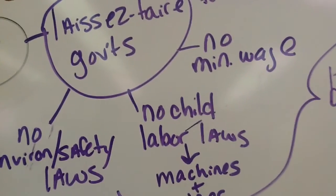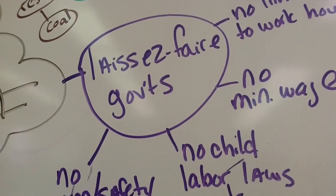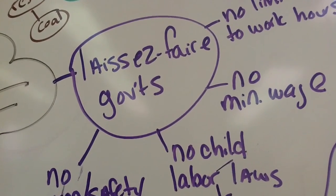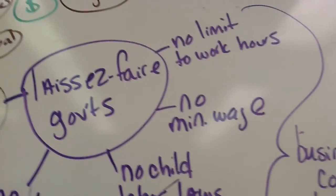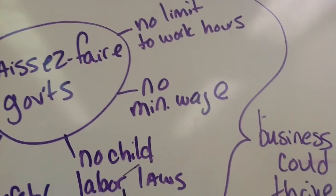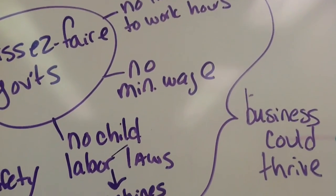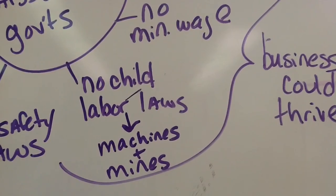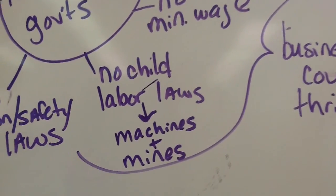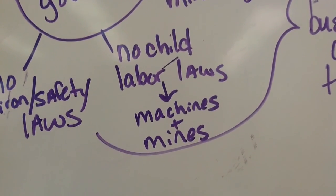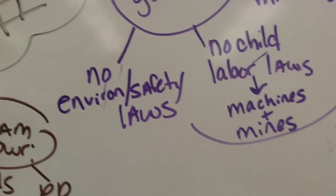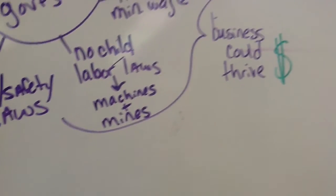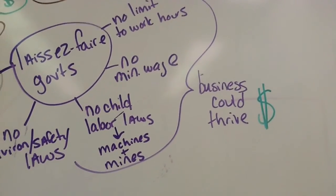Laissez-faire governments were one reason the Industrial Revolution was able to take place. They let businesses run themselves without government interference. There was no limit on work hours, no minimum wage, no child labor laws — children were often preferred because they were small and could work inside machines and in small mines. There were also no environmental or safety laws. All these conditions allowed businesses to thrive.